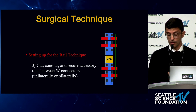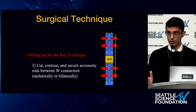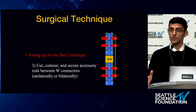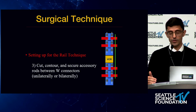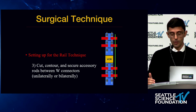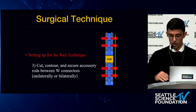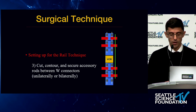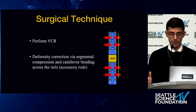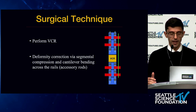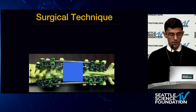You can do this unilaterally or bilaterally, but this should initially be done unilaterally. This again is your provisional stabilization when performing your decompression. The workhorse for deformity correction — everything will be done along this lateral accessory rod. Then you perform the VCR and deformity correction via segmental compression and cantilever bending through this accessory rail.